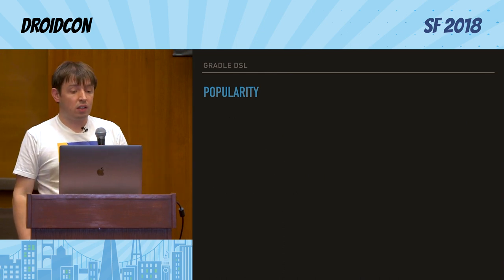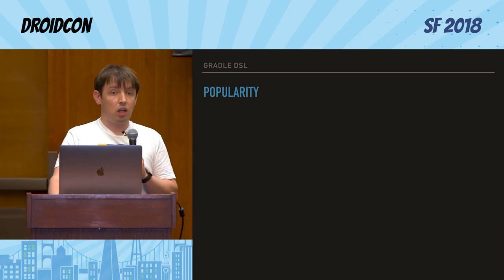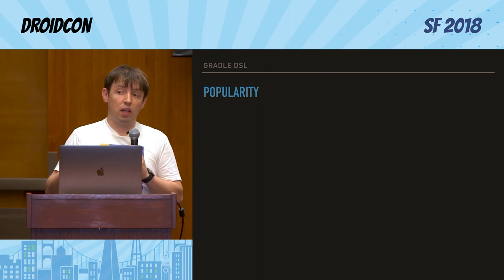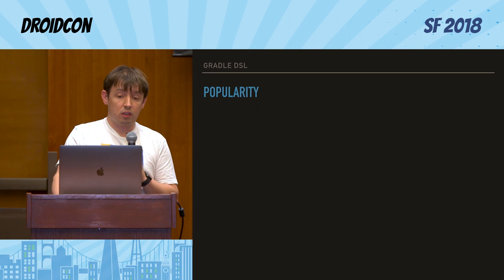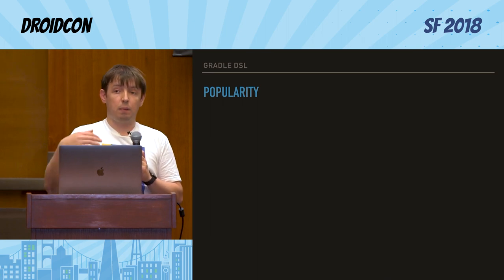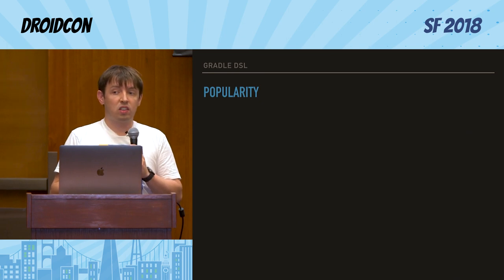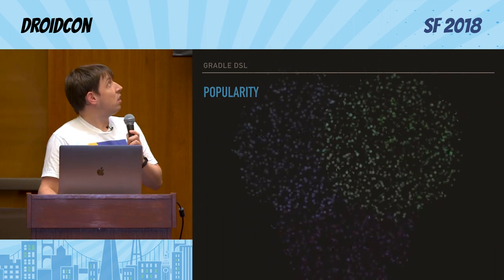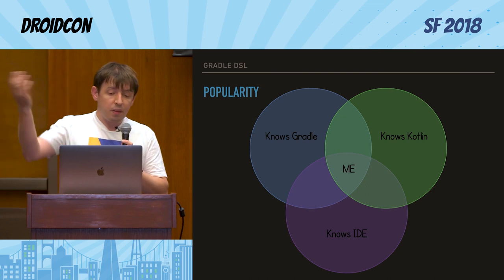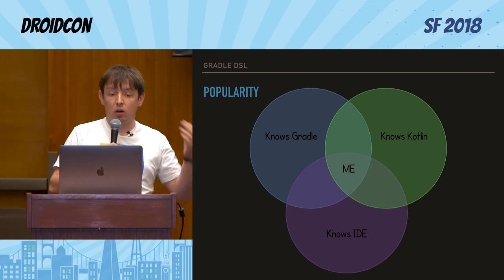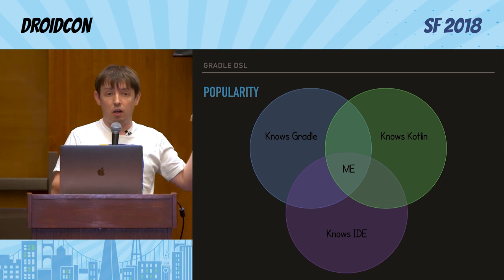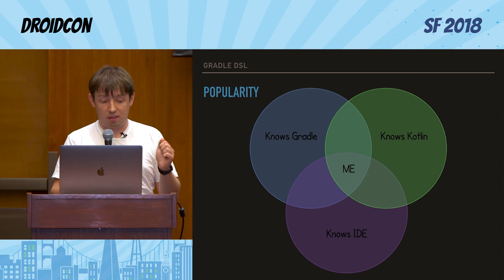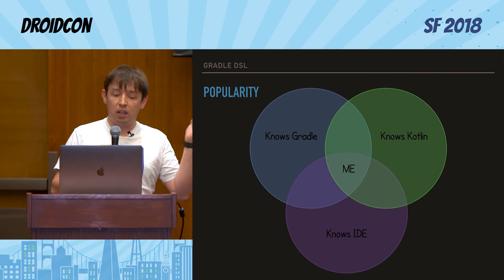Last week I visited Android Dev Summit hosted by Google, and I had some questions about whether Google is planning to do more support for Kotlin Gradle DSL — better tooling, making plugins Kotlin-DSL first. It turns out this Venn diagram looks pretty descriptive: all the folks from Google I met know either Gradle, or Kotlin, or IDE — maybe two of them — but no one knows all three. It was only me who was interested in all of IDE, Gradle, and Kotlin, and mixing them together.